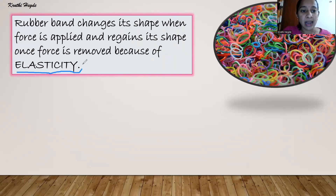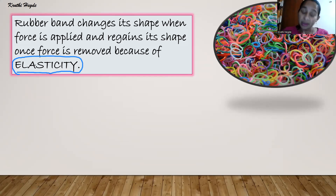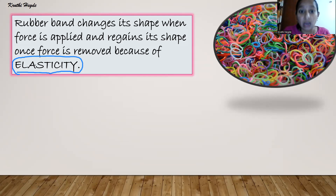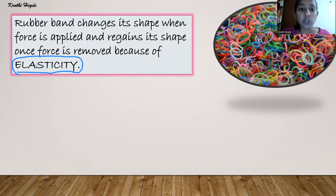That is because of the property of elasticity. Elasticity makes the rubber band expand when force is applied and regain its shape once the force is released. So though rubber band is a solid, it can change its shape because of elasticity. When excessive force is applied, it will lose the property of elasticity and will break or be torn. This is an exception.